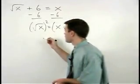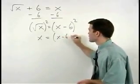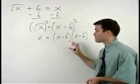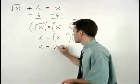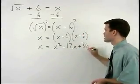So we have x equals x minus six times x minus six and foiling the right side we have x equals x squared minus 12x plus 36.